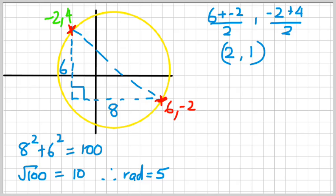As you can see, my diagram is not the best. But that's where the center is. So if that's the center, the equation is (x-2)² + (y-1)² = 25.